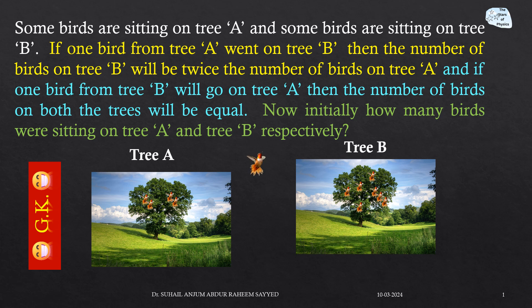Hello and welcome back. Here we have a problem: some birds are sitting on tree A and some birds are sitting on tree B. If one bird from tree A goes to tree B, then the number of birds on tree B will be twice the number of birds on tree A. And if one bird from tree B goes to tree A, then the number of birds on both trees will be equal. How many birds were initially sitting on tree A and tree B respectively?